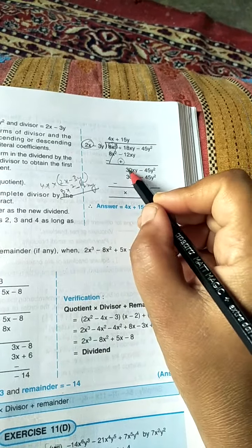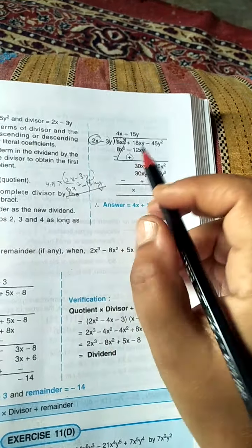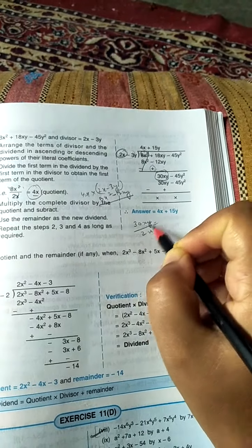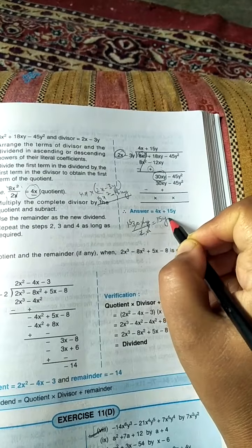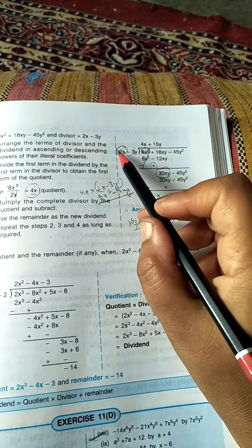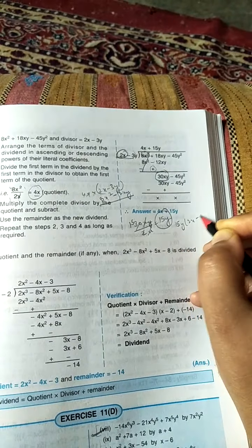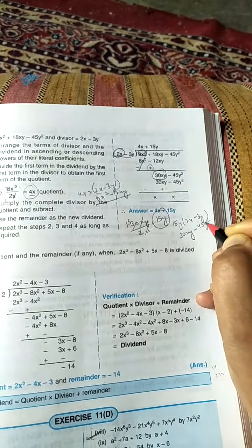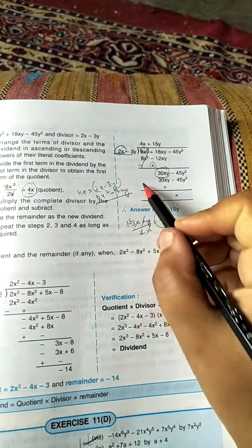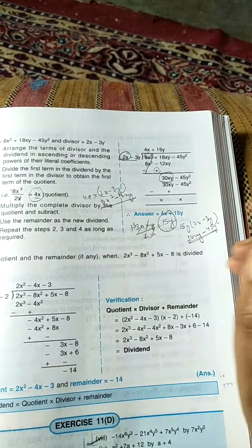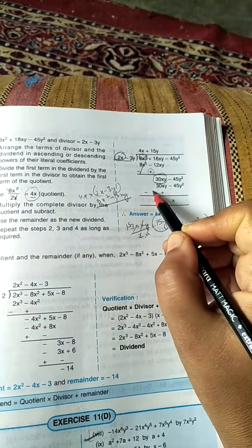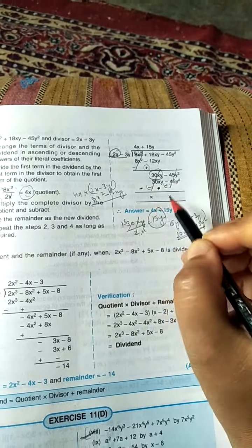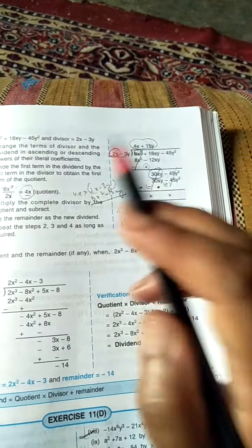Again divide this 30xy by this 2x. So 30xy upon 2x will give you, x will cancel x, 2 times 15 is 30, so 15y. Now multiply this 15y to this complete divisor. So 15y into 2x minus 3y will give you 30xy minus 45y square. Now put this result here: 30xy below 30xy, minus 45y square below 45y square. Again subtract: here is plus sign so put a minus, and here is minus so put a plus. Plus minus cancel, plus minus cancel. So the remainder is 0 and the quotient is 4x plus 15y.